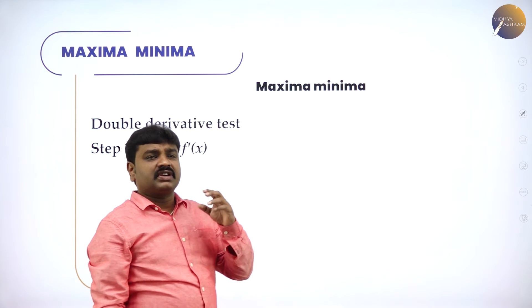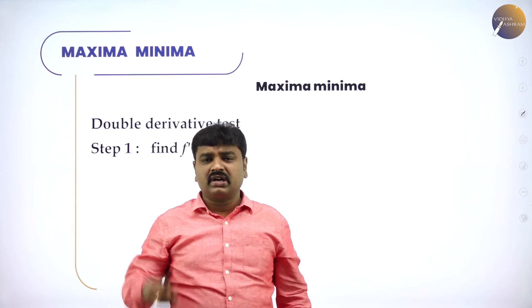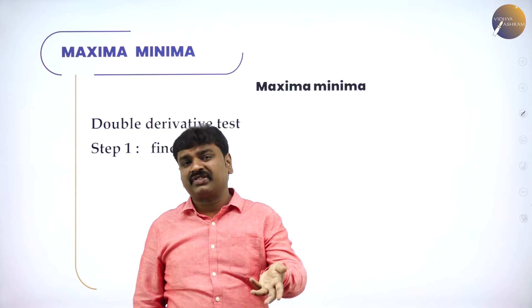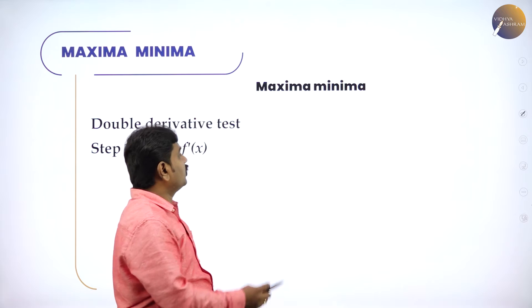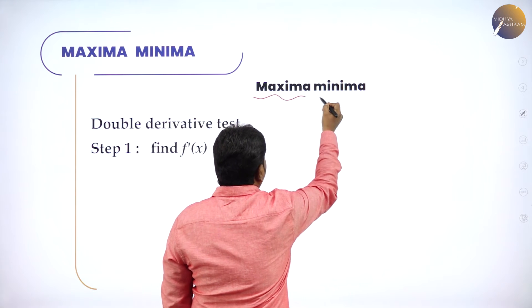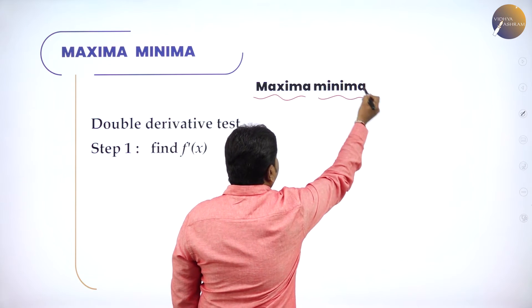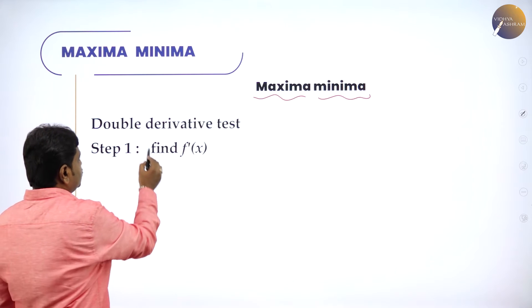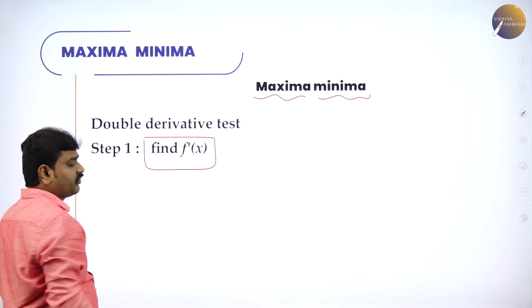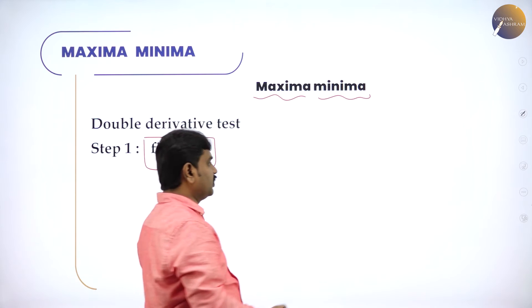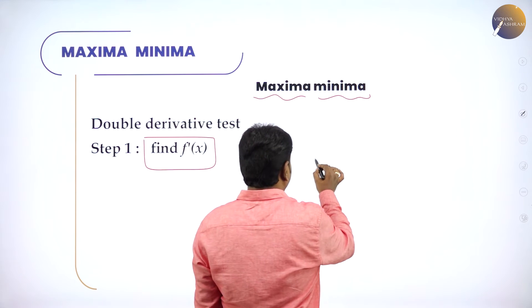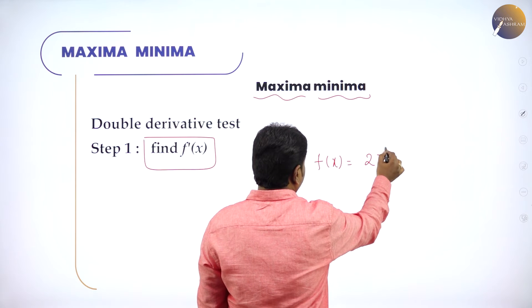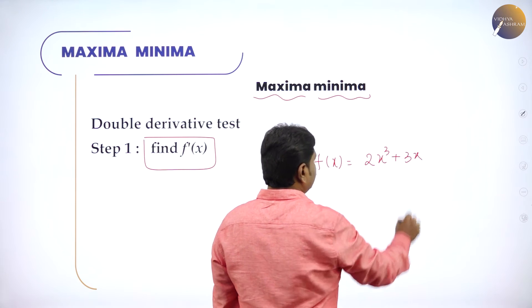To decide whether the function is increasing or decreasing and to find the maximum and minimum values, I am teaching you maxima and minima by the technique called the double derivative test. There are three steps. Step one: find dy/dx or f'(x). For example, f(x) = 2x³ + 3x, something like this.